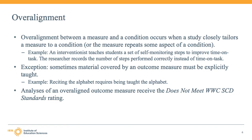If a study uses an overaligned outcome measure, the WWC will rate all analyses that use that measure 'does not meet WWC SCD standards.' Of note, this rule does not apply if material covered by an outcome measure must be explicitly taught. For example, reciting the alphabet requires being taught the alphabet. The WWC would not consider this measure overaligned in situations where teaching young children to recite the alphabet is a developmentally appropriate component of the intervention.